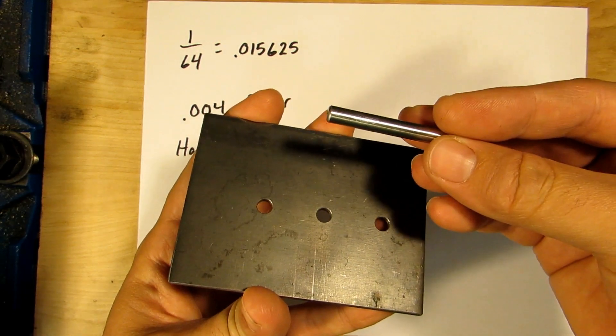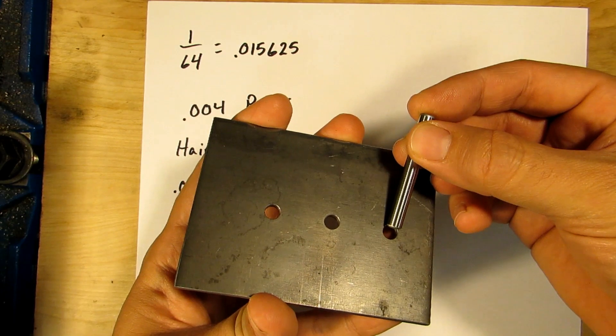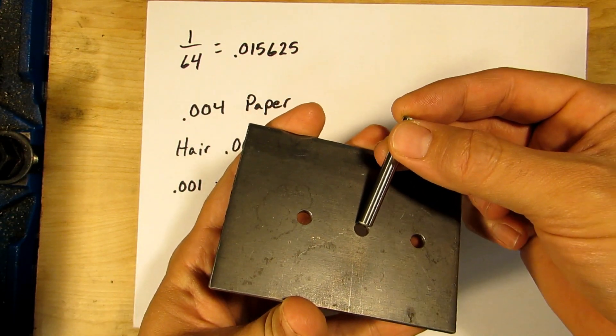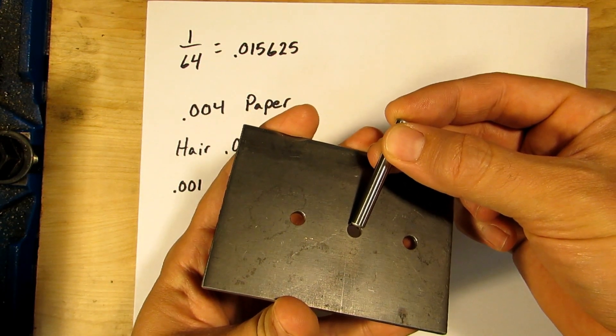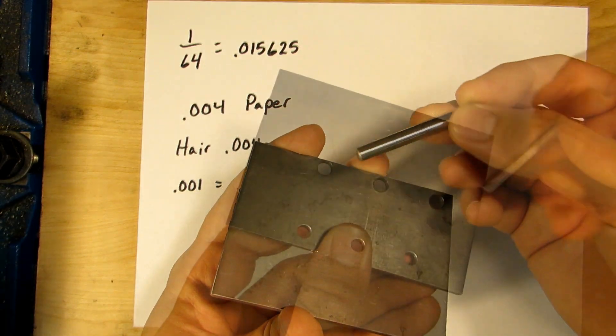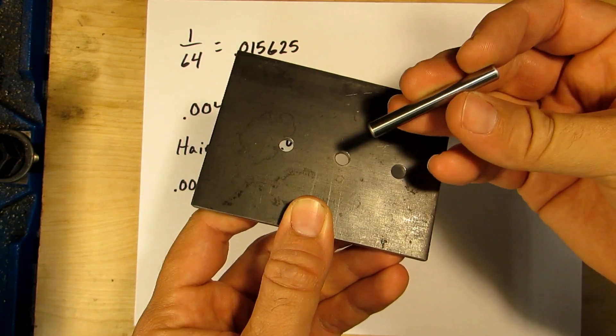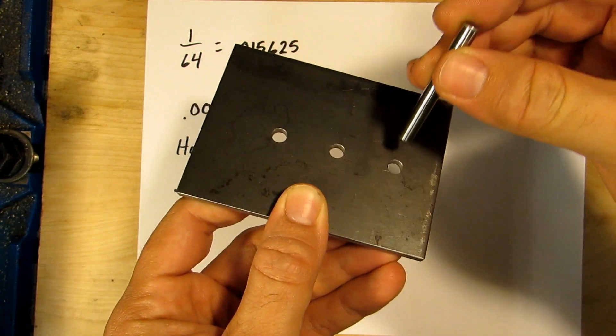I've got a piece of scrap here that I've drilled and reamed three holes in, and this is a quarter inch dowel pin. I've drilled and reamed this hole to 249 thousandths, this hole to 250 thousandths on the nose, and this hole to 251 thousandths.